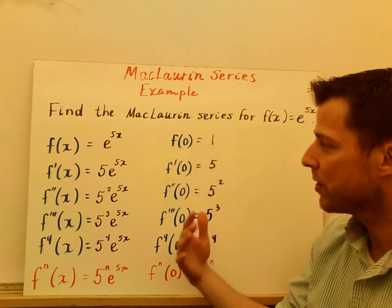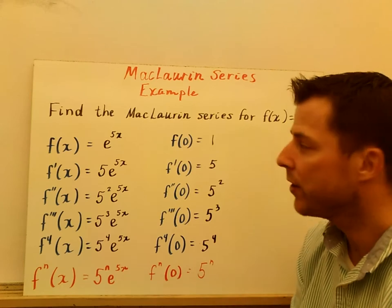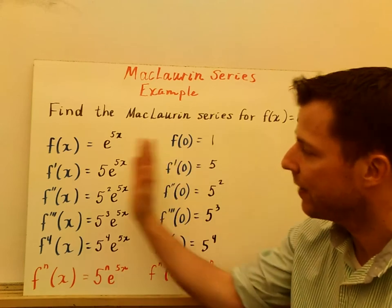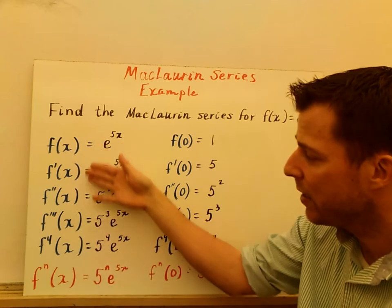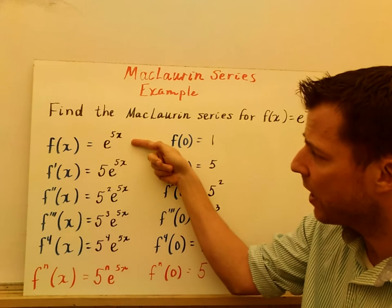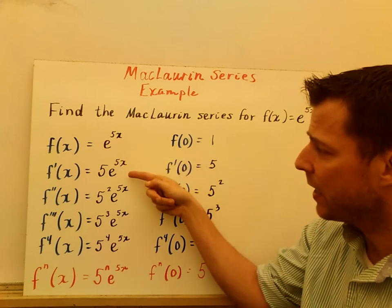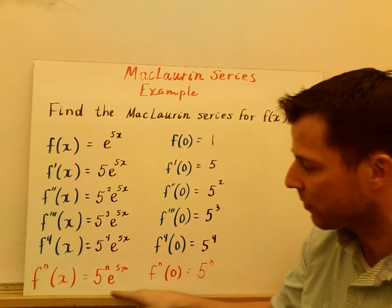So to find the Maclaurin series, what we're going to do is really divide our board here into two different things. On the left half, I'm going to be finding the first n derivatives, and I usually go out to 4 or 5, depending on the function. So you can see here f(x), and then f'(x), f''(x), f'''(x) to the 4th, and then kind of in general here what I noticed, the pattern.